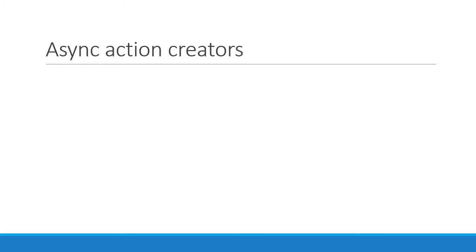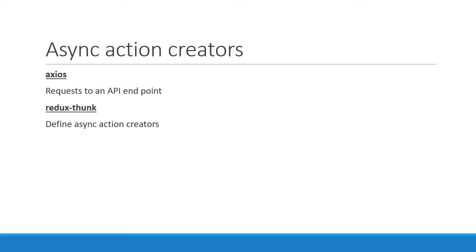Now there are two packages that we need to install. The first one is Axios, which will be used to make GET requests to an API endpoint. The second package is Redux Thunk. This is a package from the Redux ecosystem and is the standard way to define asynchronous action creators in your application. The Redux Thunk library is basically a middleware we will be applying to our Redux store. Rather than explaining this theoretically, let us dive straight into the code to understand how to define an async action creator using Axios and Redux Thunk.